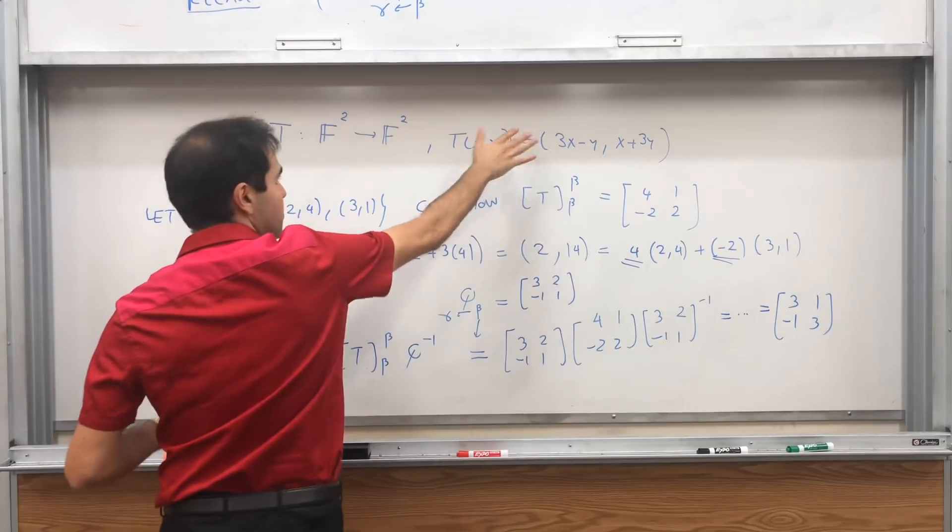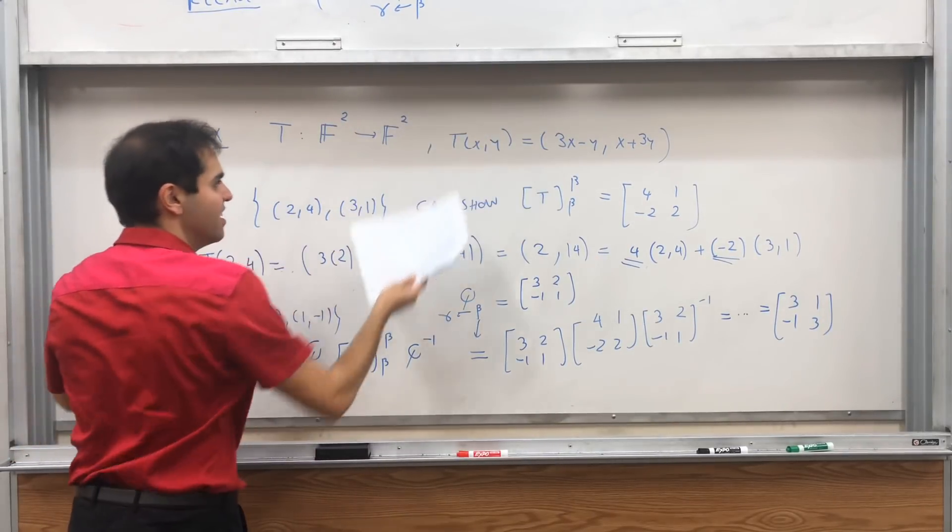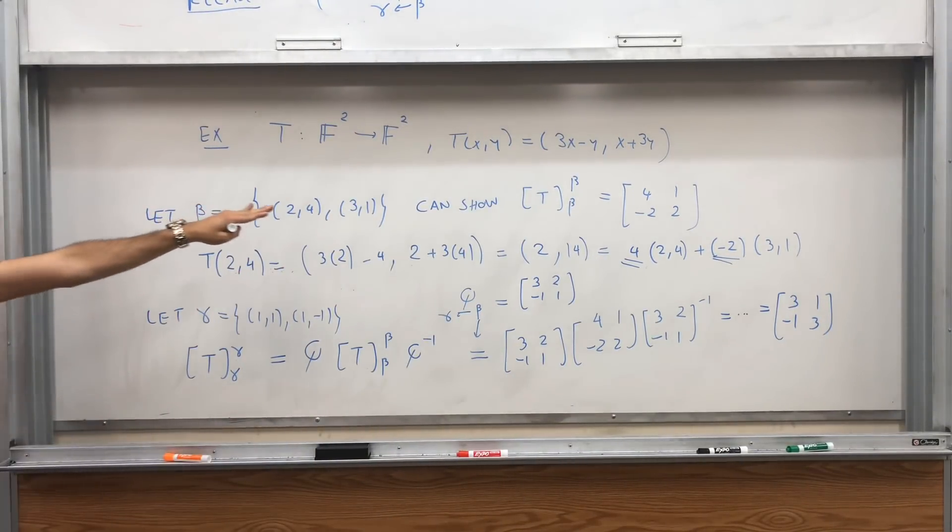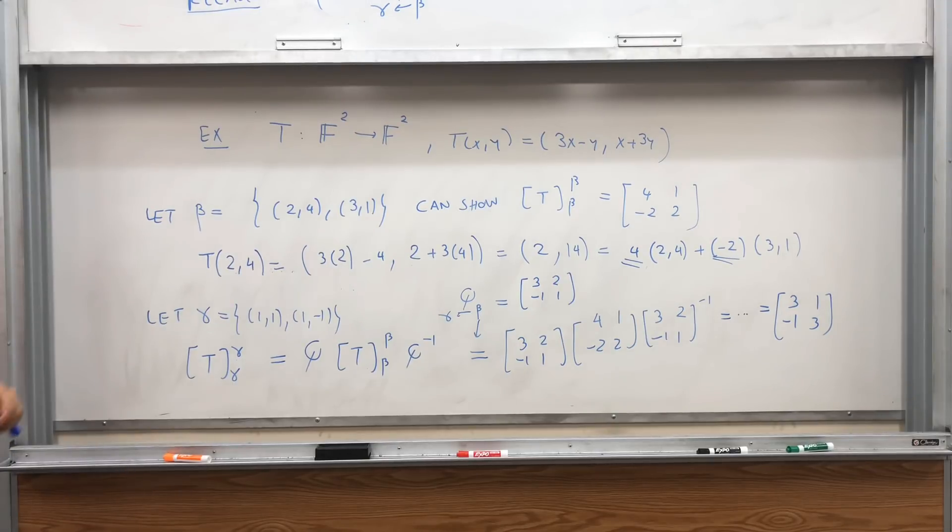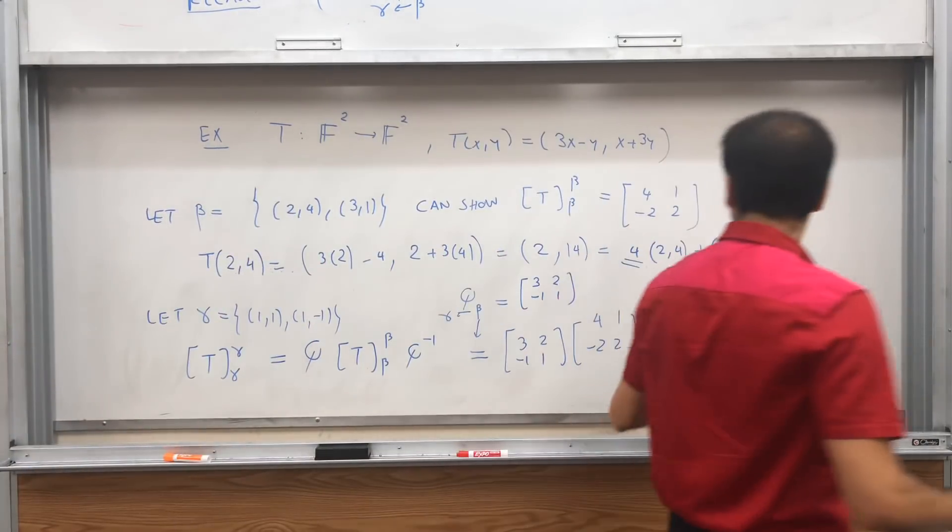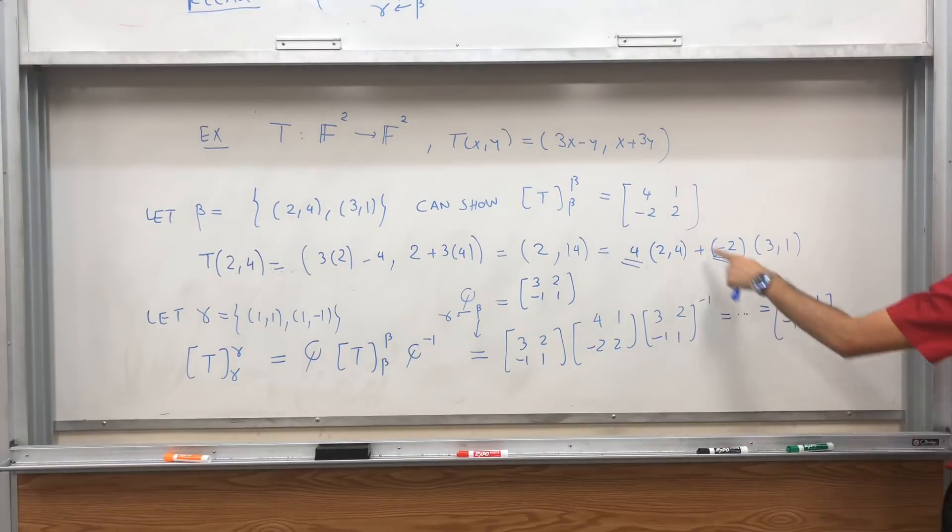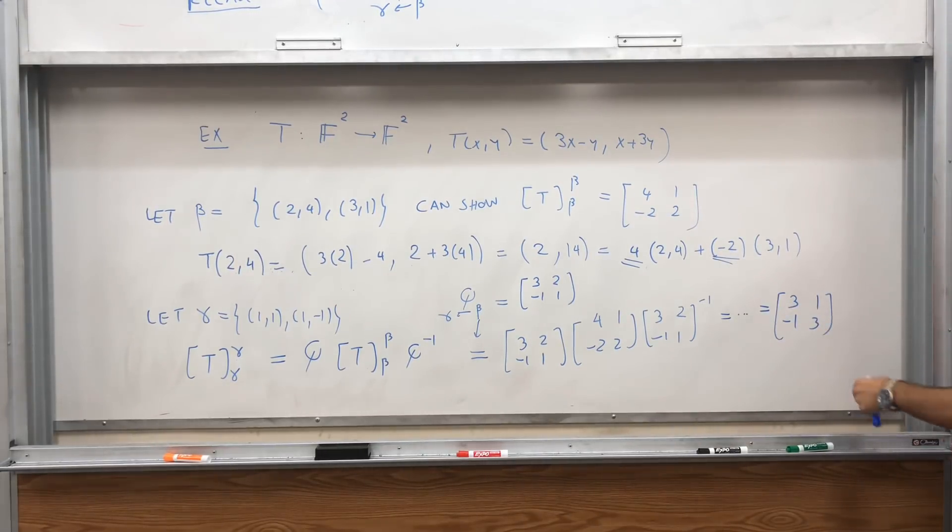And again, strictly speaking, at no point did we calculate what T is. So you can start with this matrix and directly go to this other matrix. And notice in particular, this is much nicer than this one. It's, well, not quite symmetric, but pretty. It's almost like rotation or something.